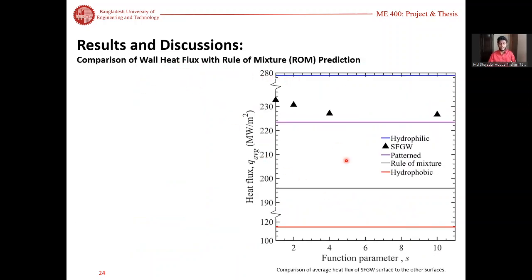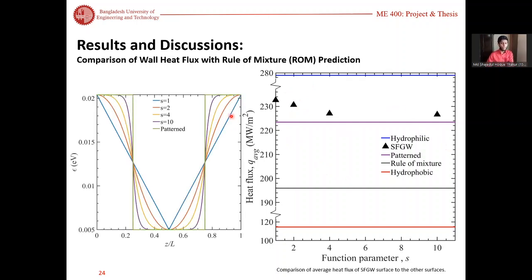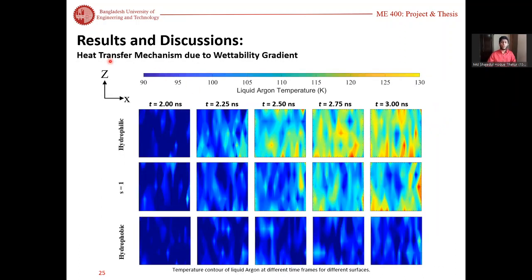If we look at the average wall heat flux and compare it with the rule of mixture prediction, we see that the pattern surface gives higher heat flux than the rule of mixture prediction, and the sFGW surface gives even higher than the pattern surfaces. We can see that for the smallest gradient of s equal to one we get the highest heat flux, and as the gradient increases to s equal to five or ten, we get lower heat flux.